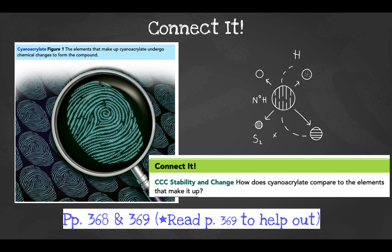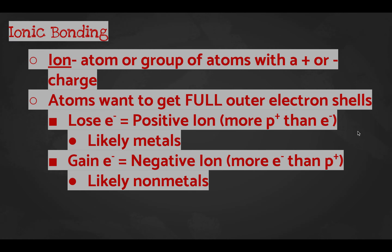Remember we talked about this with sodium chloride — sodium is a soft silvery reactive metal, chlorine is a green toxic gas, but they come together and make table salt that we put on our food every day. Keep that in mind: what happens when elements get together and make compounds?